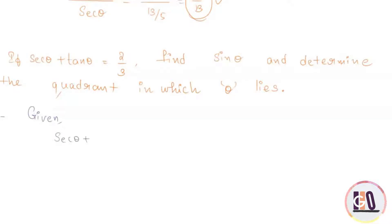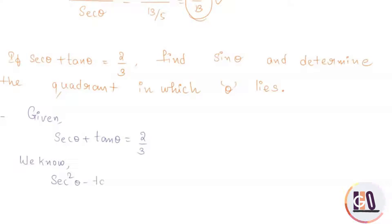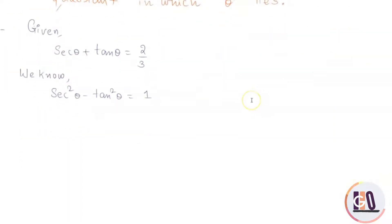When sec θ plus tan θ equals 2 by 3, we know that sec squared θ minus tan squared θ equals 1. If I expand it: secant θ plus tan θ, into secant θ minus tan θ, equals 1.